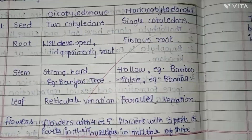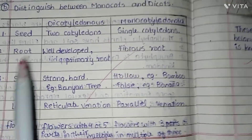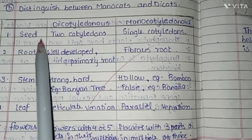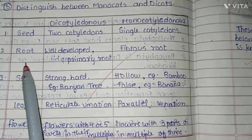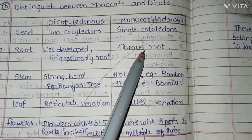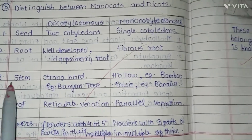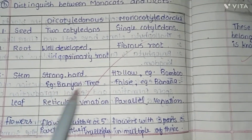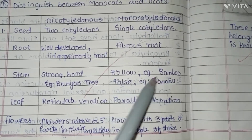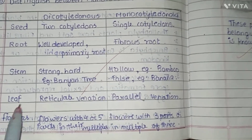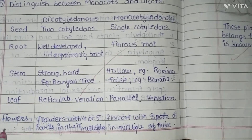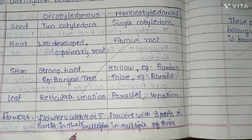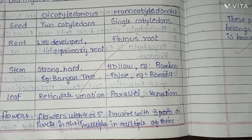Next question: distinguish between monocots and dicots. On the basis of seeds — dicots have two seeds, monocots have a single seed. Root basis — dicots have well-developed roots, monocots have fibrous roots. Stem — dicots are strong and hard, example banyan; monocots can be hollow, example bamboo and banana. Leaf — dicots have reticulate venation, monocots have parallel venation. Flowers — dicots have parts in multiples of four or five; monocots have parts in multiples of three.